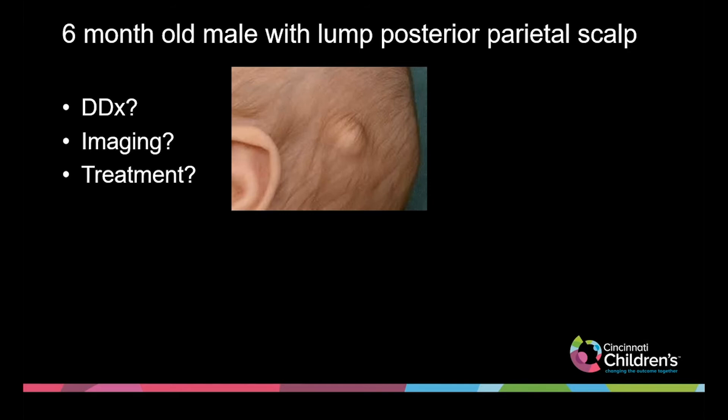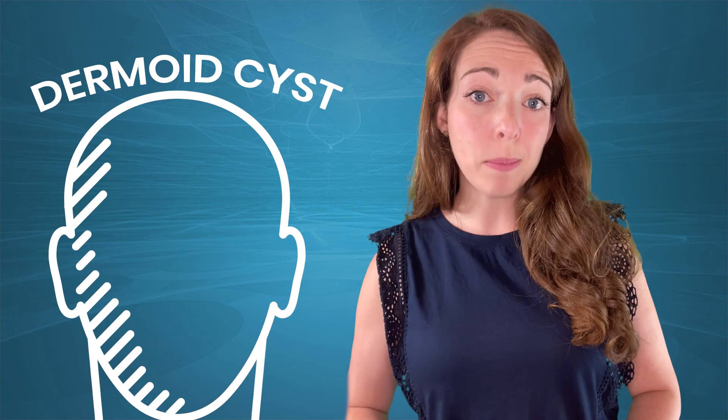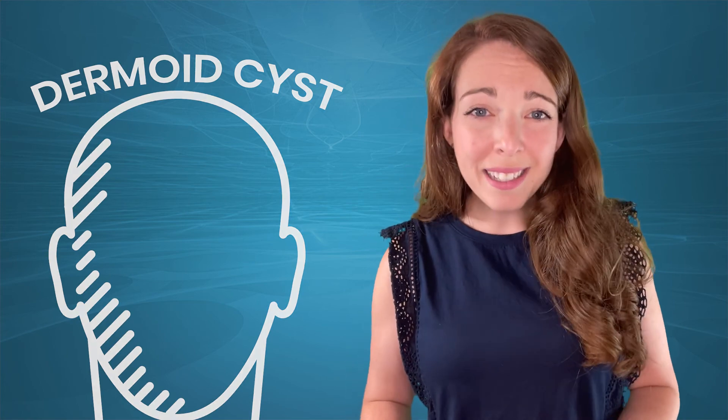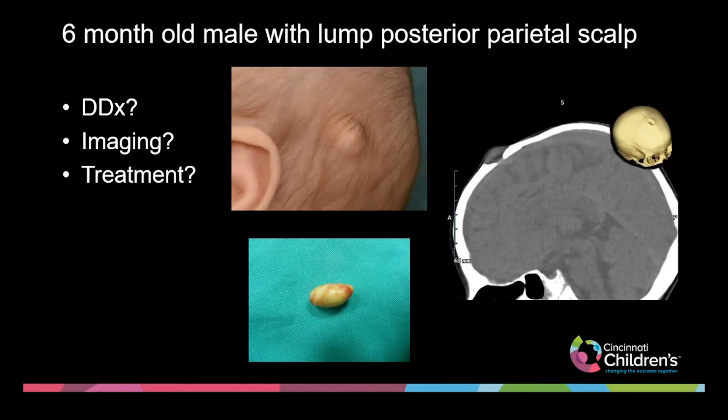This is fairly classic for a dermoid cyst of the scalp. The key thing you want to know is whether it has intracranial extension. While dermoid cysts may appear tethered to the scalp, it's really that bowl-like scalloped seating within the bone that gives it that effect. This lesion gets excised as well, and this is what they typically look like when you take them out — a yellowish, cream-cheesy kind of material.